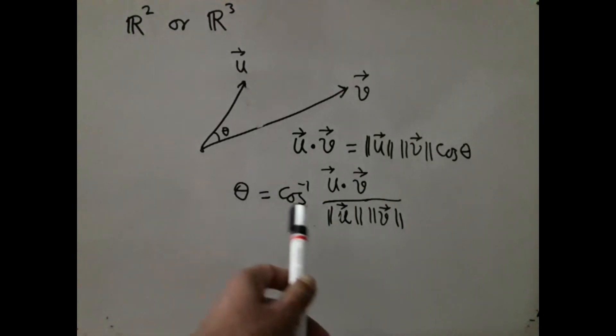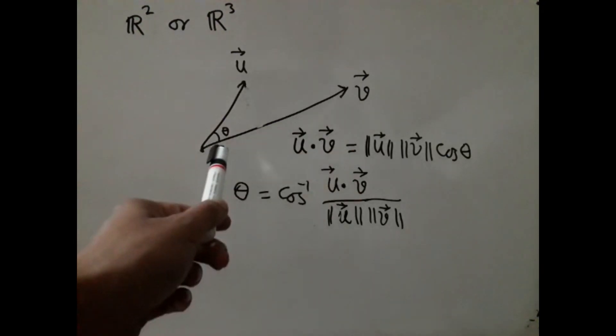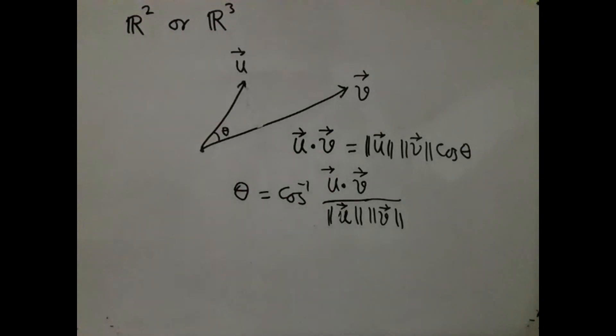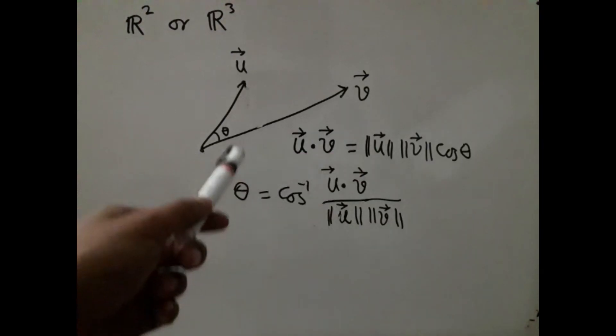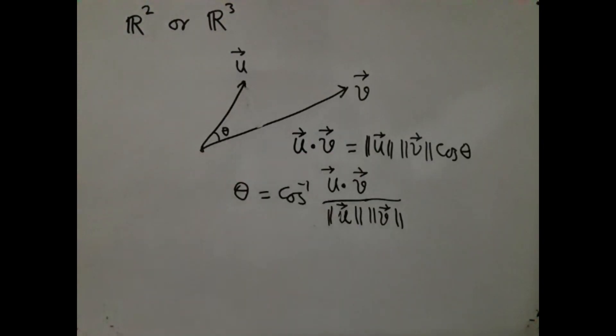Now, of course, since I am dividing by the product of the norms, they must both be nonzero, which is natural because if at least one of these vectors is a null vector, then it has got no direction. So it cannot help in forming an angle. We naturally assume that both u and v are nonzero vectors.